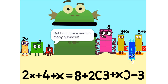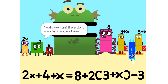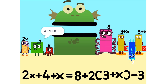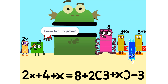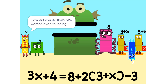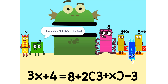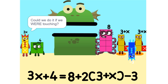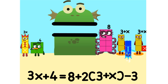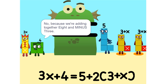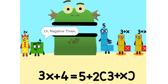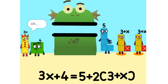Now we can figure out your value. But there are too many numbers, we'll never figure it out. Yeah, we can — if we do it step by step and use a pencil. So let's get started. One thing we can do is add these two together. How did you do that? We weren't even touching. They don't have to be. We can also add these together. Five. Wouldn't it be 11 since 8 plus 3 is 11? No, because we're adding together 8 and minus 3, or negative 3. So it's five.